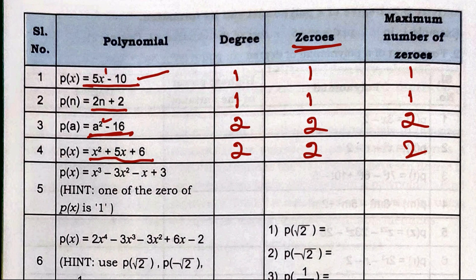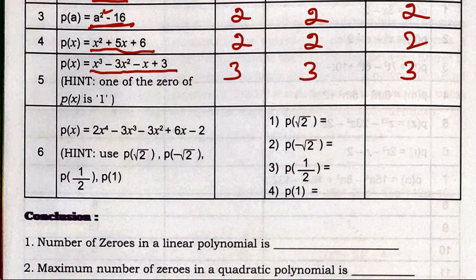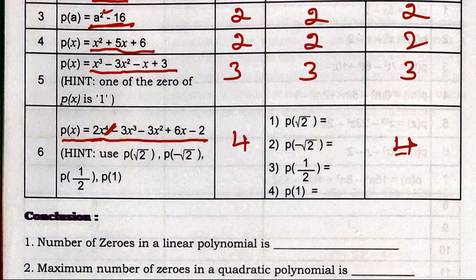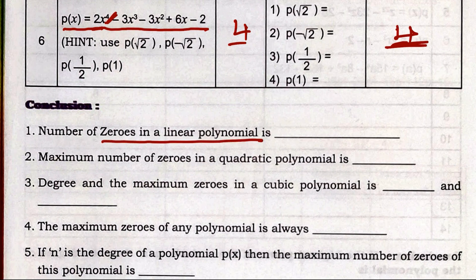For x³ − 3x² − x + 3, the degree is 3, so the maximum number of zeros is three. For p(x) = 2x⁴ − 3x³ − 3x² + 6x − 2, the highest power is 4, so the degree is 4 and the maximum number of zeros is four.